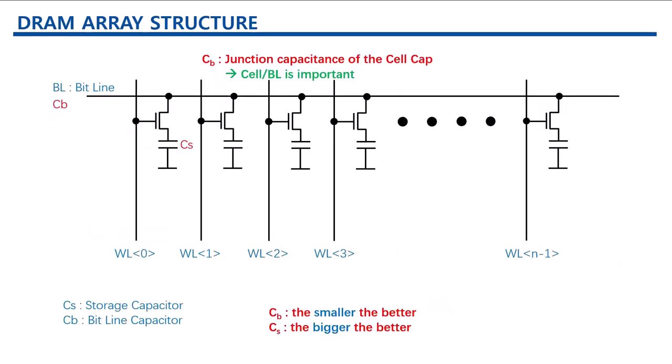Most of the bit line capacitance, Cb, consists of the junction capacitance of the access transistors. To have a bigger value after the charge sharing, the bigger Cs and smaller Cb is preferred.